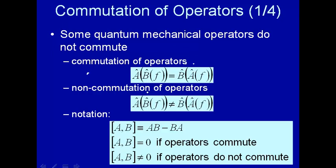If, on the other hand, it makes a difference which operator you take first, then you say the operators do not commute — there is non-commutation of operators. The notation for this is brackets: the operator A, B, and that equals zero if the operators commute, and is not equal to zero if the operators do not commute. The brackets indicate: operate first with B then A, and then subtract the result from A then B. If it doesn't make a difference, this result will equal zero.